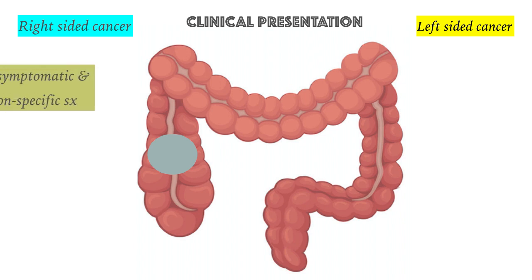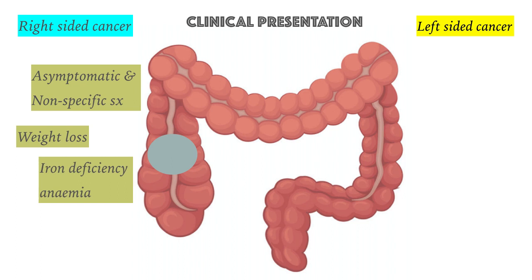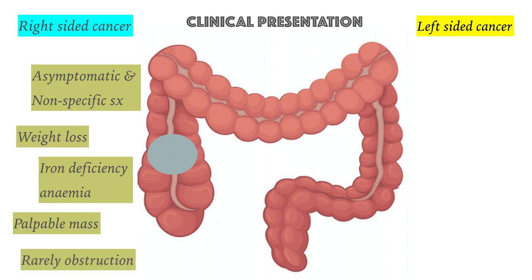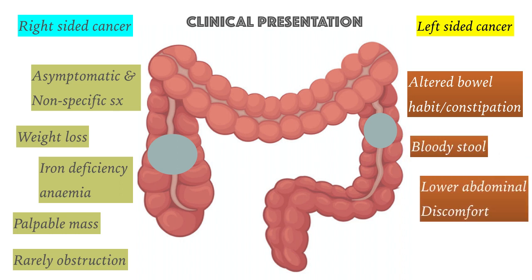At right-sided cancer, the patient is usually asymptomatic or has non-specific symptoms. The patient may have weight loss, iron deficiency anemia, and a palpable mass. However, obstruction rarely occurs because of the large calibre of the ascending colon. Meanwhile, for left-sided cancer, the patient usually presents with altered bowel habit and constipation, bloody stool, and lower abdominal discomfort.